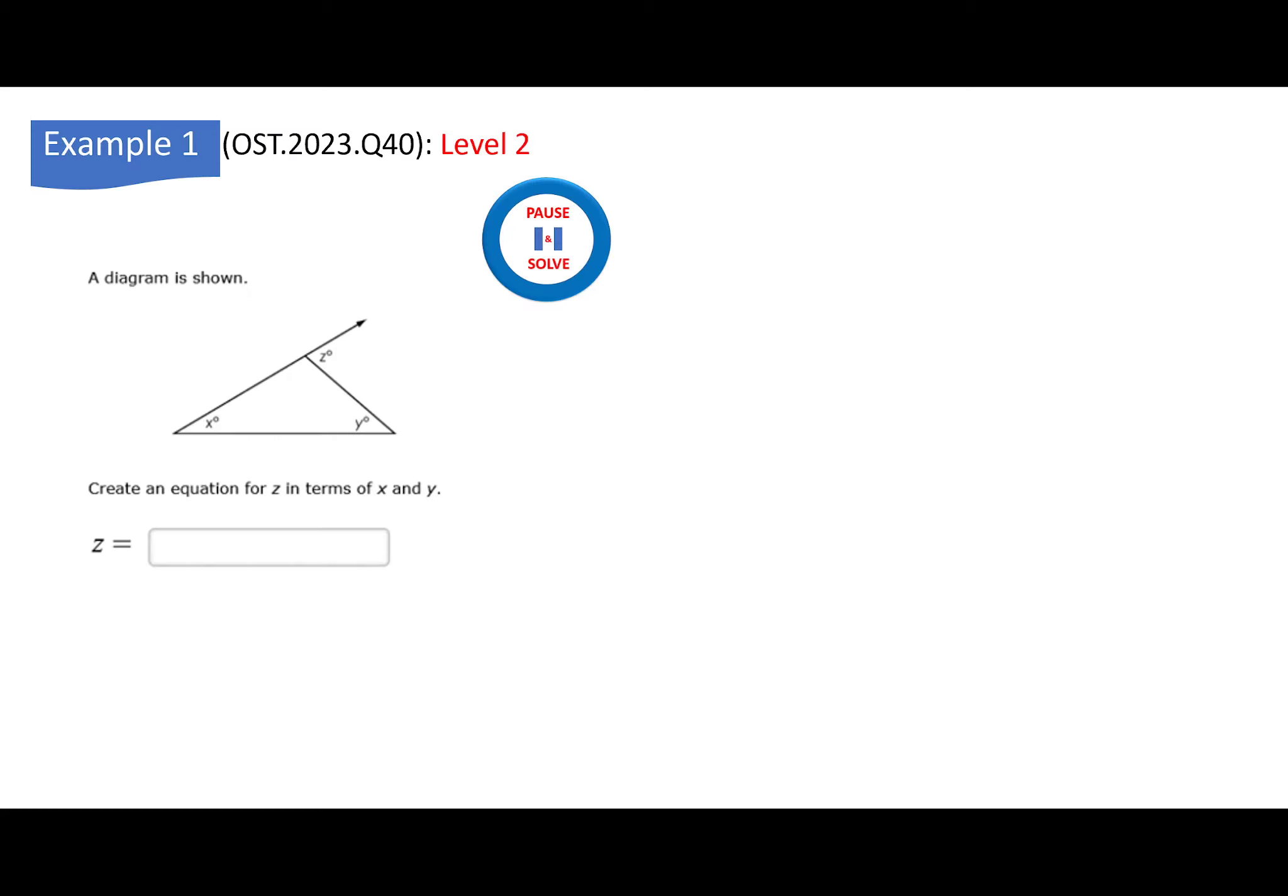Example 1. In this example, a figure is given to you, diagram, and he's asking you to create an equation for z in terms of x and y. This is, look, z is an exterior angle. I know it's equal to the sum of the two opposite angles. So that's straightforward. z is equal to x plus y. And you get a full mark for that. z equals x plus y. This is my exterior angle. These are the two opposite interior angles.